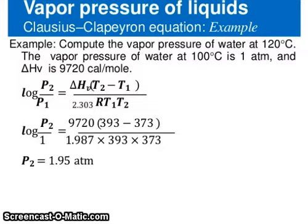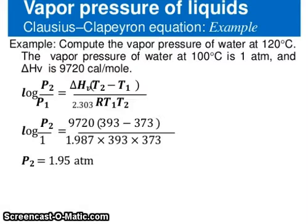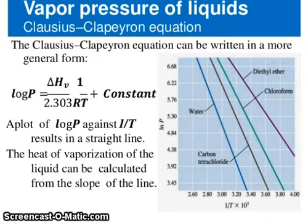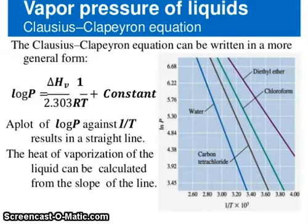For example, compute the vapor pressure of water at 120°C, given that the vapor pressure of water at 100°C is 180 mmHg and ΔH is 9720 cal/mol. You can substitute the values and calculate P2. The Clausius-Clapeyron equation can also be written in a more general form: log P = −ΔHv / (2.303 R T) + constant. A plot of log P against 1/T gives a straight line, and the heat of vaporization can be calculated from the slope.